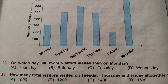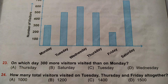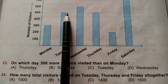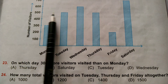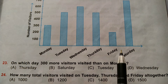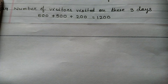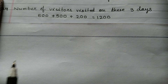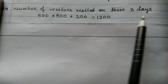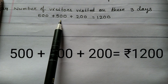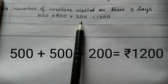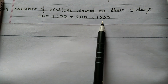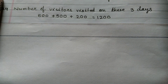Question number 24: How many total visitors visited on Tuesday, Thursday and Friday altogether? Number of visitors on Tuesday: 500. On Thursday: 500. On Friday: 200. Hence, number of visitors on all three days: 500 plus 500 plus 200, that is equal to 1,200. Option B is correct.